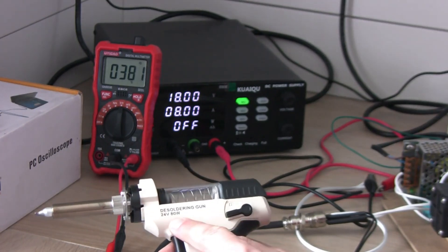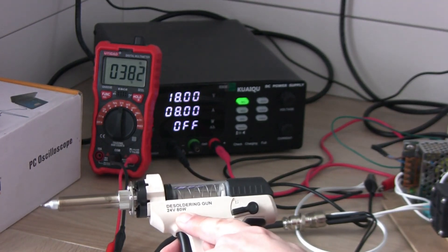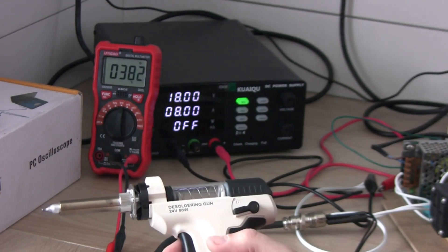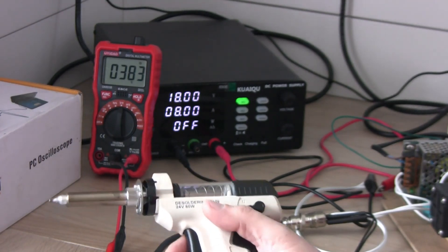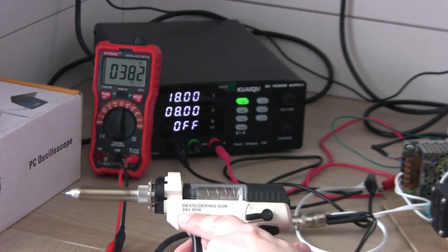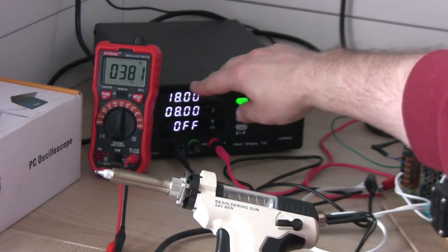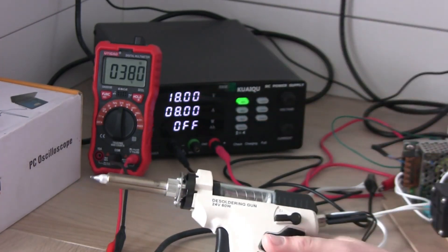As you can see, it is much more than declared 80 watts on 24 volts. So no surprise that these guns fail when they are powered from 24 volts. I would even think that this 18 volts is probably a little bit too much.